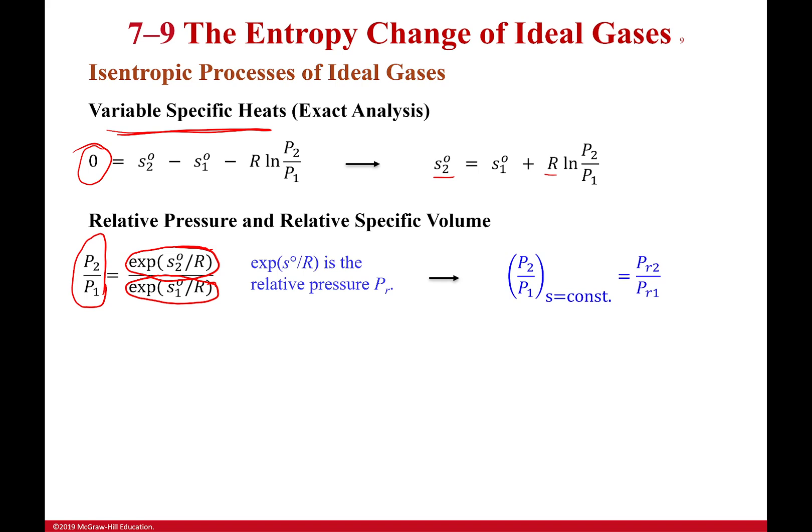And so what we do then is we say, well, you know what? You term, you're going to be something called relative pressure 2. You'll be called relative pressure 1. Why? Because I'm saying it's proportional to a ratio of pressures. So why not call it something based on pressure?